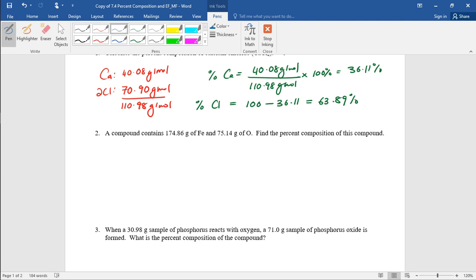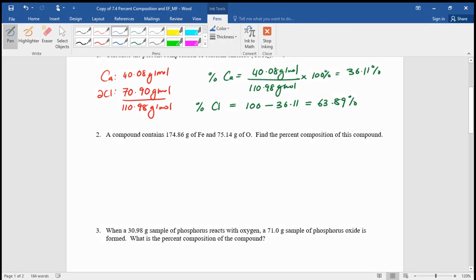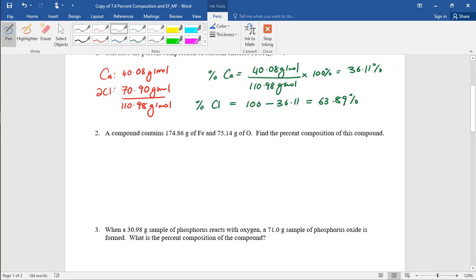A compound contains 174.86 grams of iron and 75.14 grams of oxygen. You have to find the percent composition of this compound. Remember, iron is a transition metal. We don't know whether it's iron 2 or 3. So you can just write the total mass of compound. You can say that this is rust, because iron and oxygen is rust, or you can just say it's some combination of iron and oxygen.